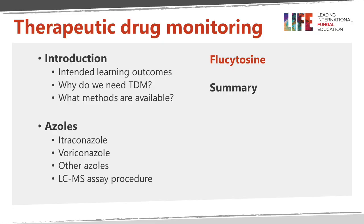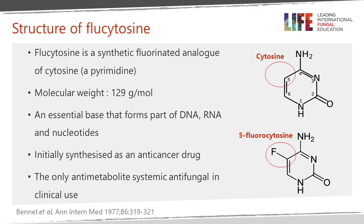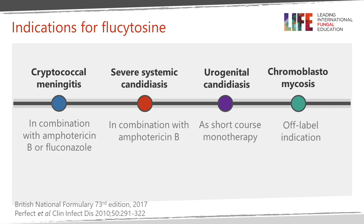Now addressing flucytosine: it is a synthetic fluorinated analogue of the DNA base cytosine, with a small molecular weight. It was originally discovered as an anti-cancer drug and in high concentrations has bone marrow toxicity. It is the only anti-metabolite systemic antifungal in clinical practice. Flucytosine is indicated particularly for cryptococcal meningitis in combination with amphotericin. It can also be used in severe systemic candidiasis and with the emergence of multi-resistant Candida auris and Candida glabrata infections. It's excreted in the urine, so some use it for urogenital candidiasis, and there is an off-label indication for chromoblastomycosis.